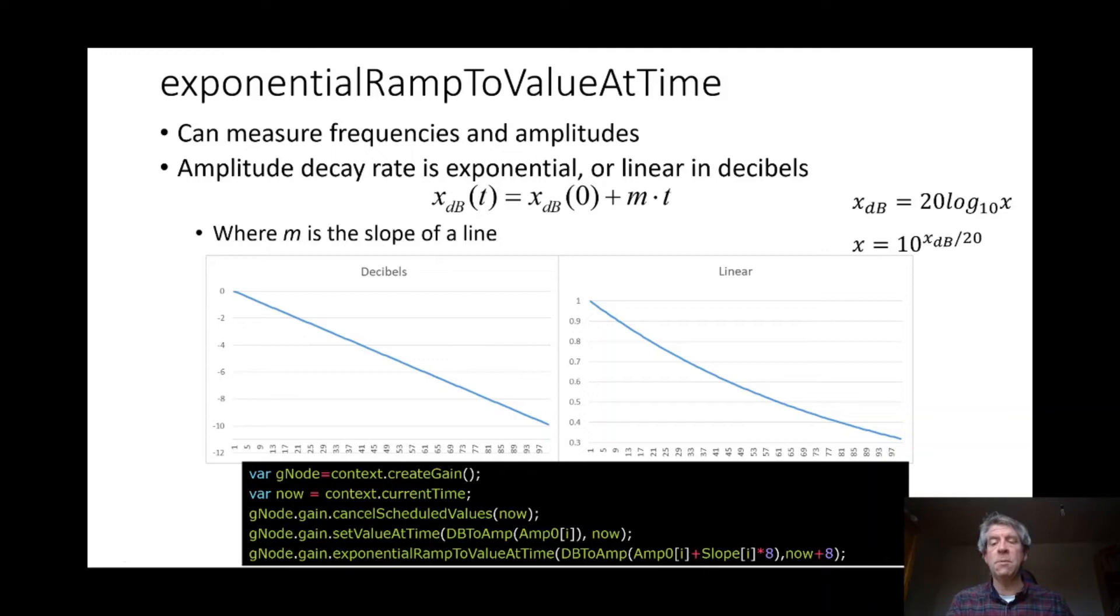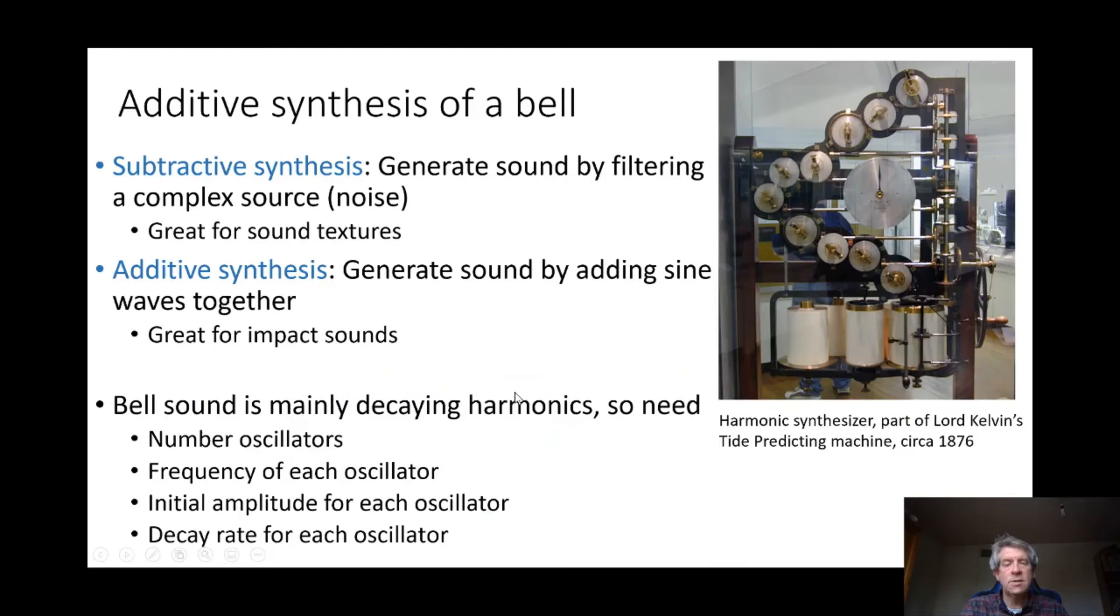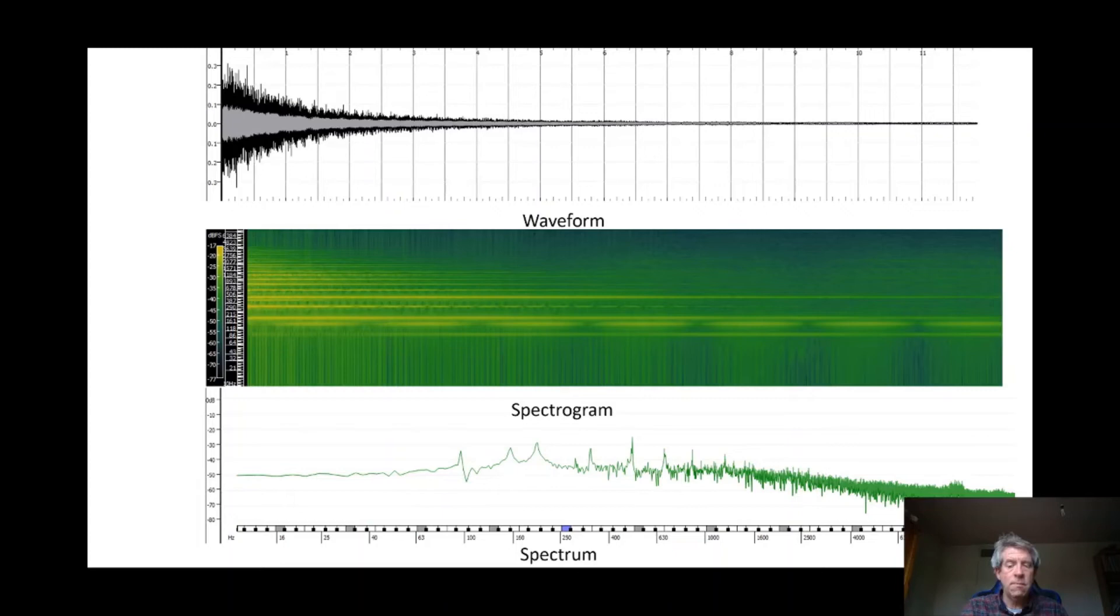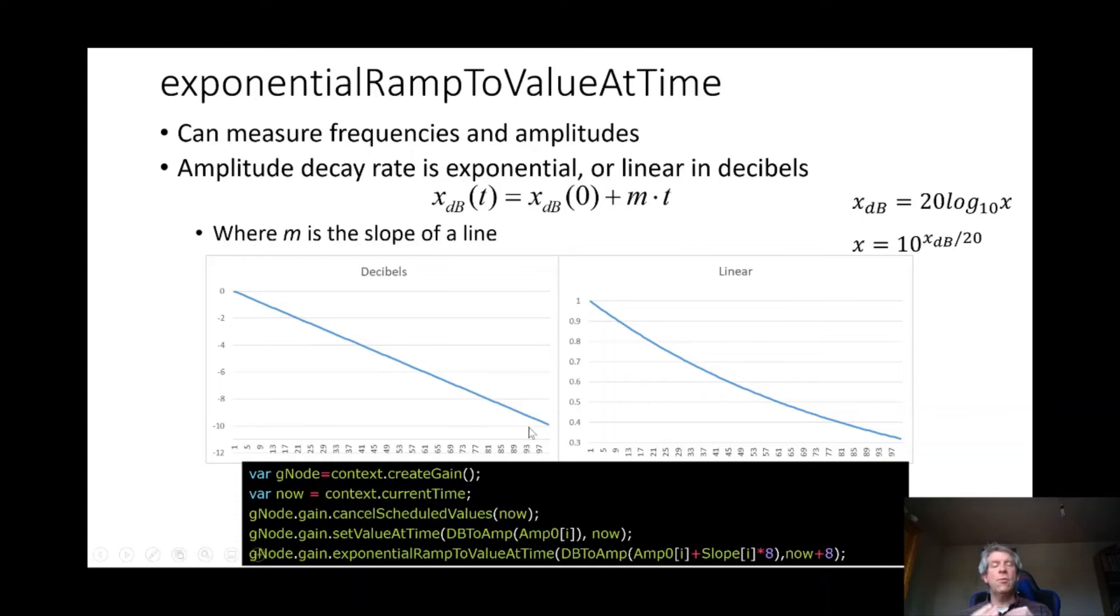If you convert that to instead of being in terms of decibels but as a linear value—say just a linear gain that would be applied to an oscillator's amplitude—then you have this exponential decay or exponential ramp to some value over time. So we can work with that. We just need the decibel values and we know the slope of this curve, which one can get from analyzing the waveform and spectrogram information. If you have that information, then you can convert the decibel values to amplitudes and apply the exponential ramp to a value at a particular time on those amplitude values.